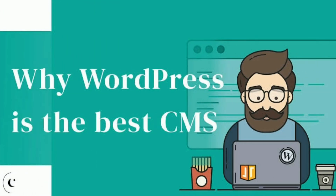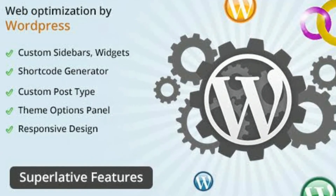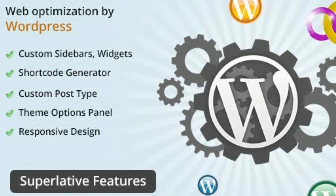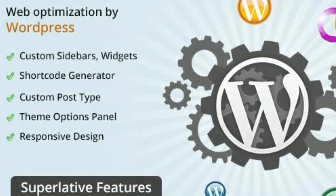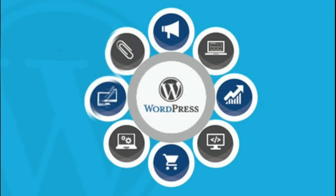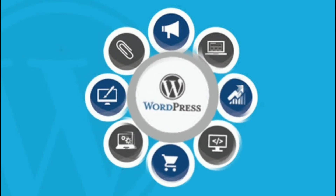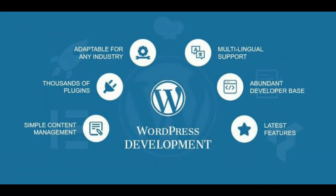Now, why does WordPress rule the CMS platform space? WordPress was developed in 2003 and has been in this space from the beginning. WordPress powers 38% of the internet, making it the most popular content management system on the planet. Being an old player in this race, it has been optimized several times and has improved a lot. WordPress also has the biggest community in web development, and the reason behind its success includes a humongous amount of plugins, extensions, and themes that make any website more attractive.